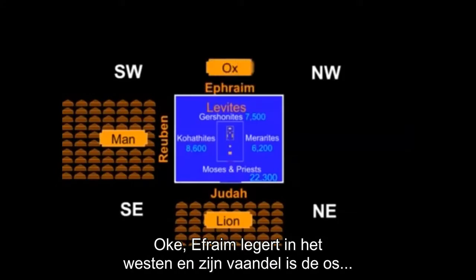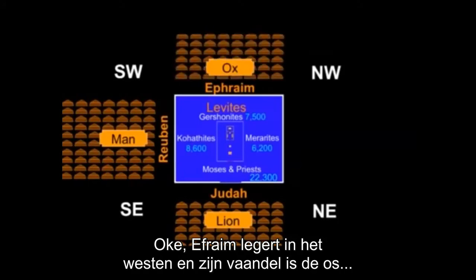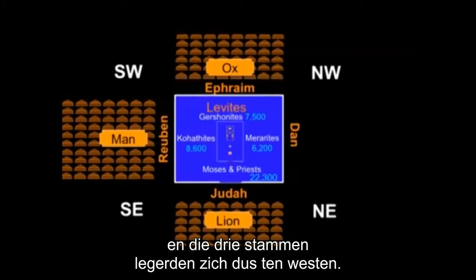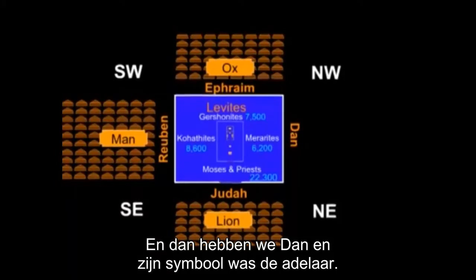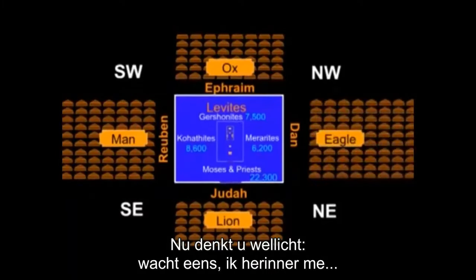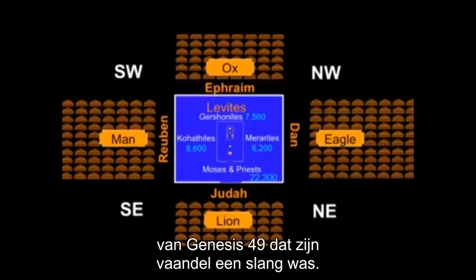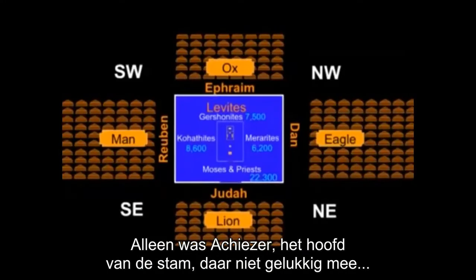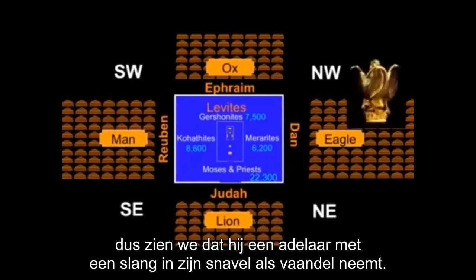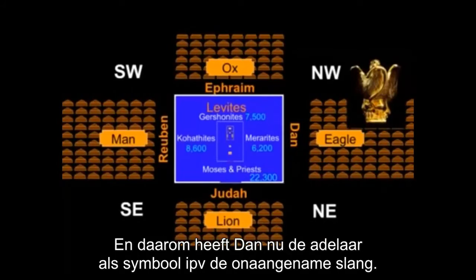Ephraim is to the west, and his ensign was the ox — the three tribes that make up the camp to the west. And then we have Dan, and his symbol was the eagle. Now, you might wonder — I remember Genesis 49, his ensign was a serpent — except Ahiezer, the head of the tribe, was uncomfortable with that. So we discover that he adopts an eagle with a snake in its mouth as his ensign. That's where Dan picks up the eagle as a more comfortable ensign than the serpent, for obvious reasons.